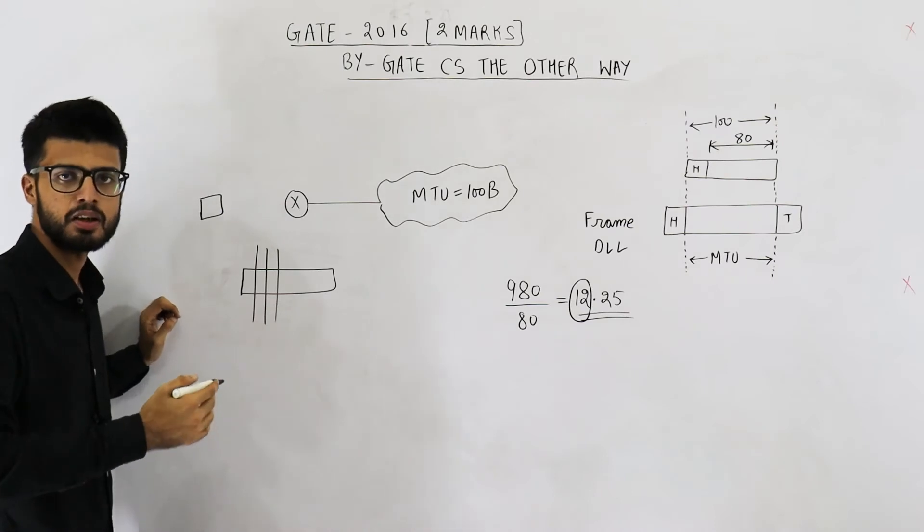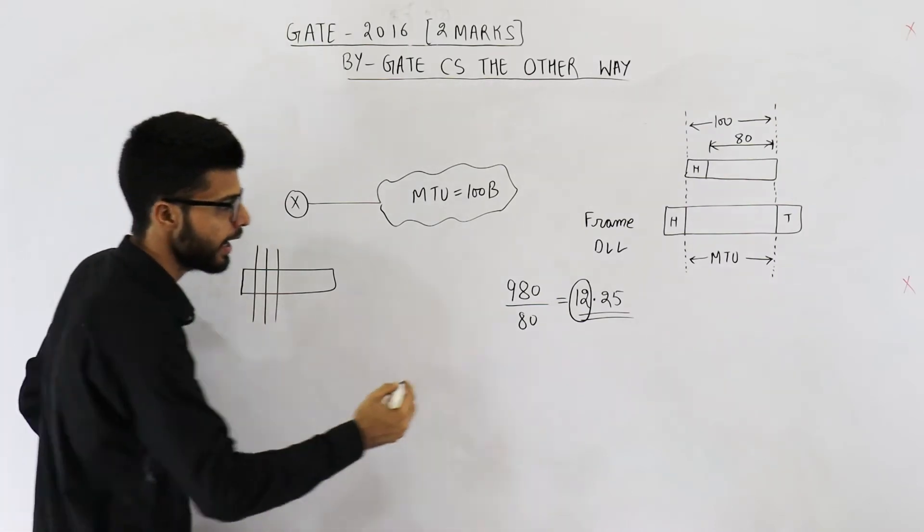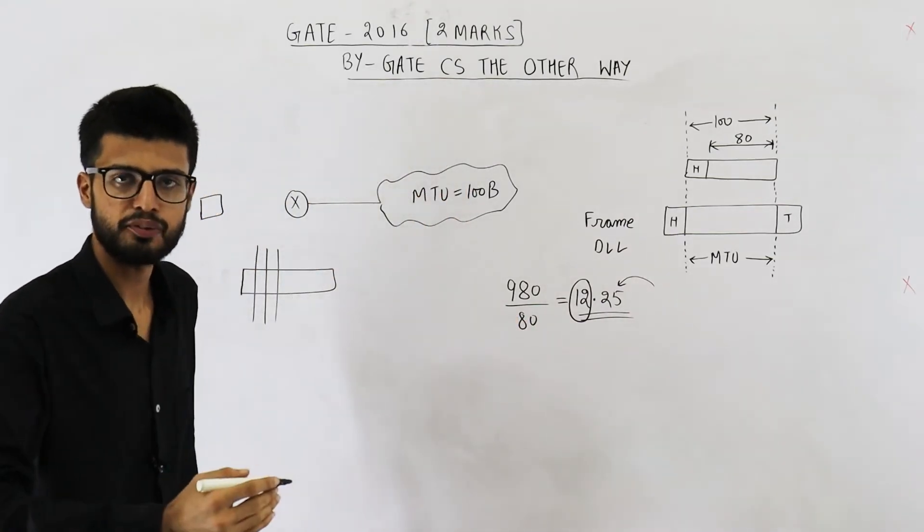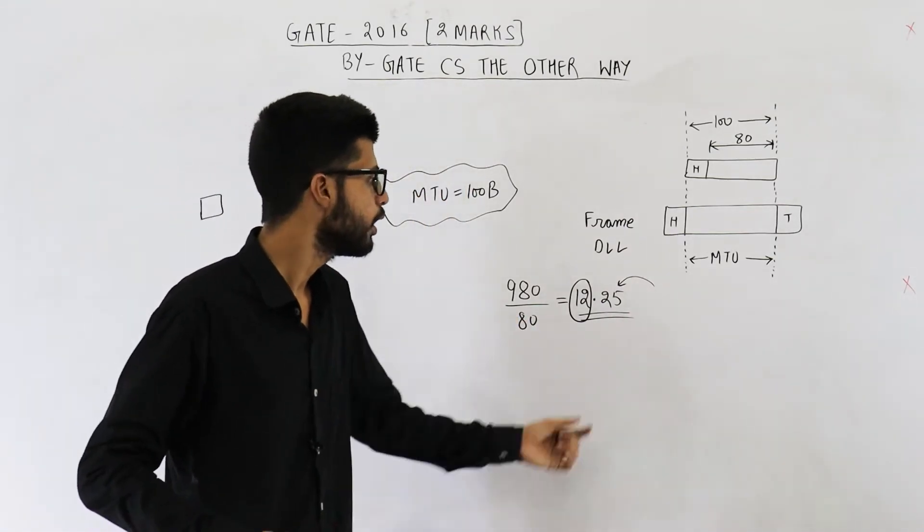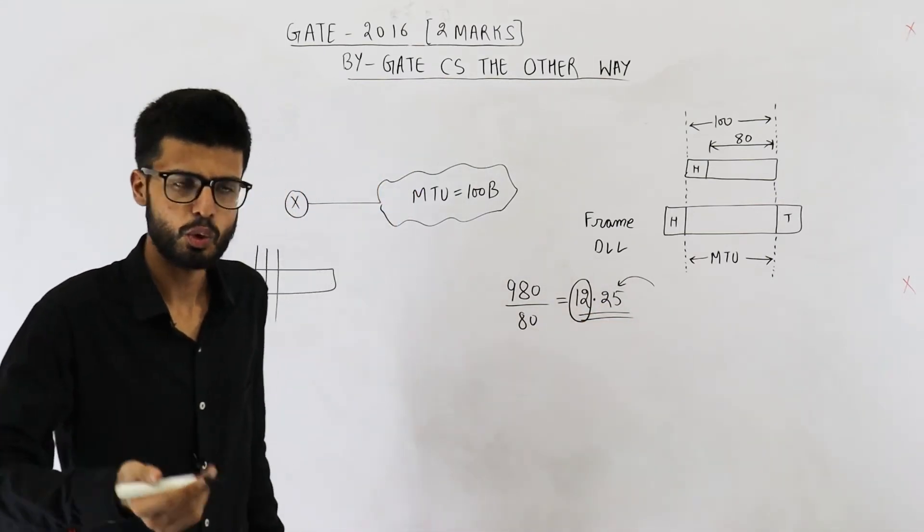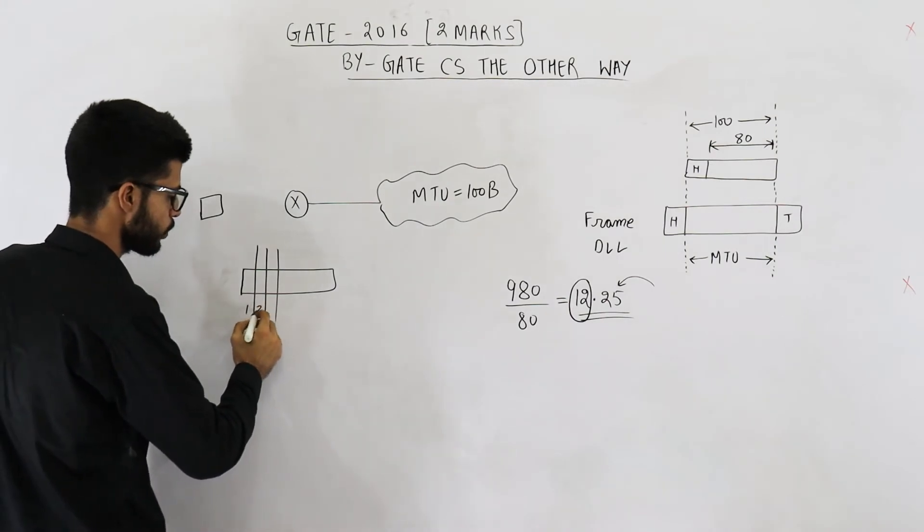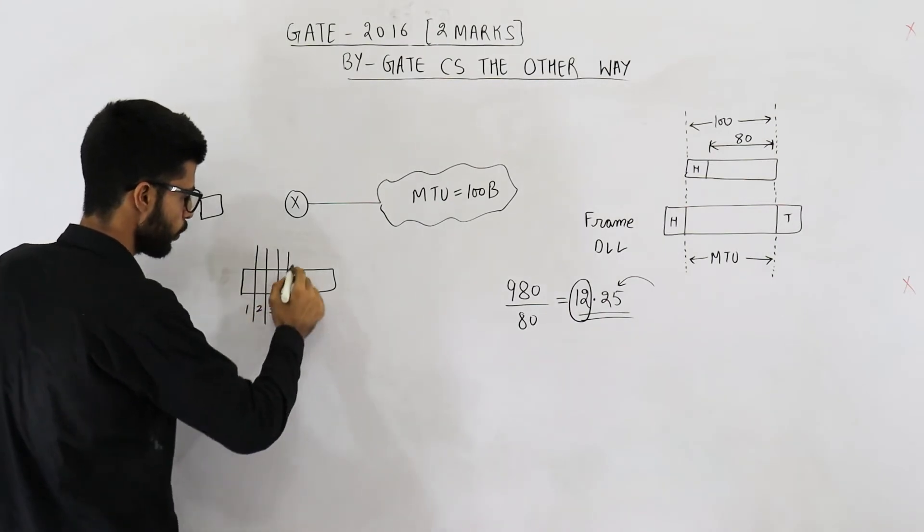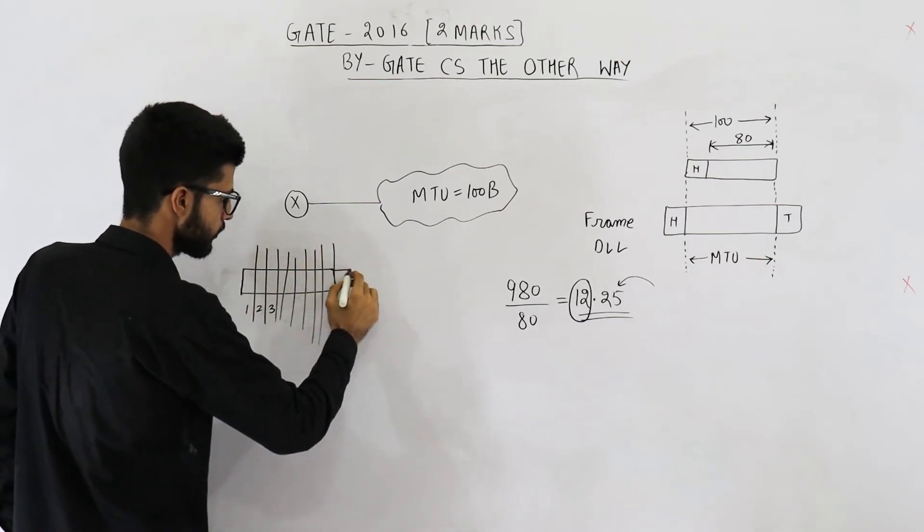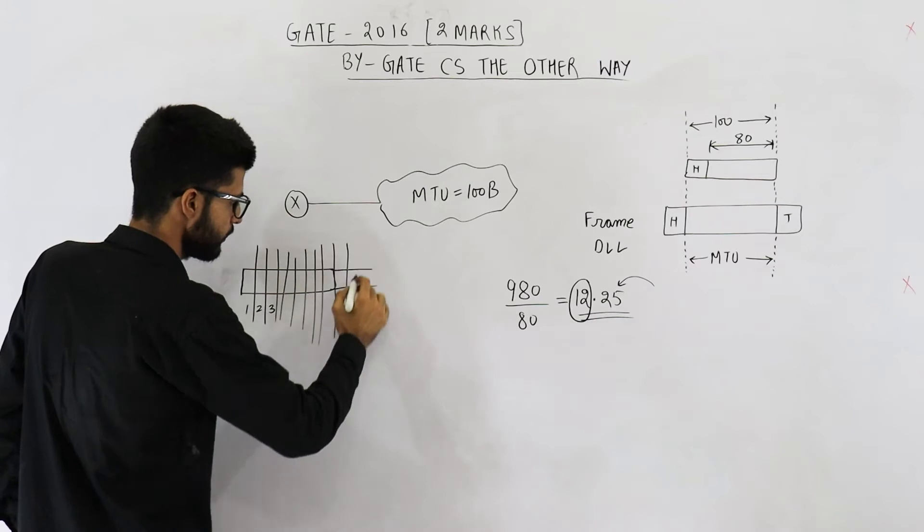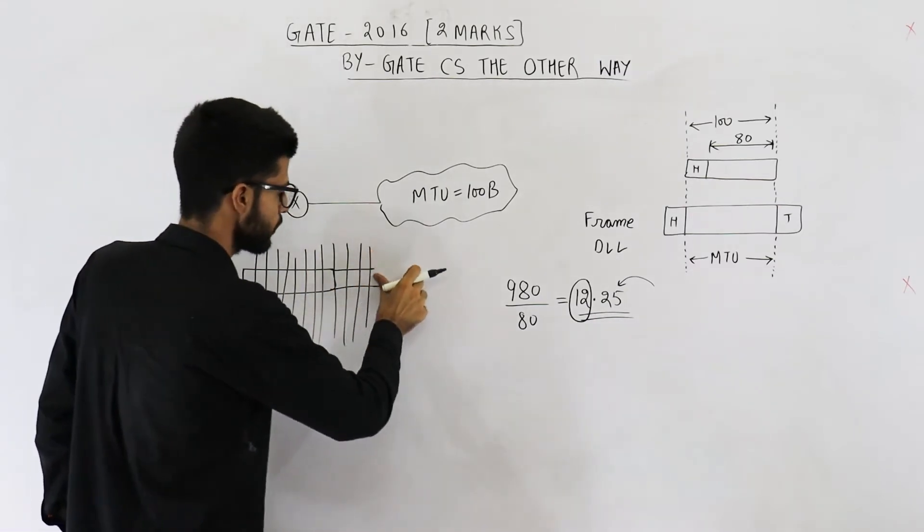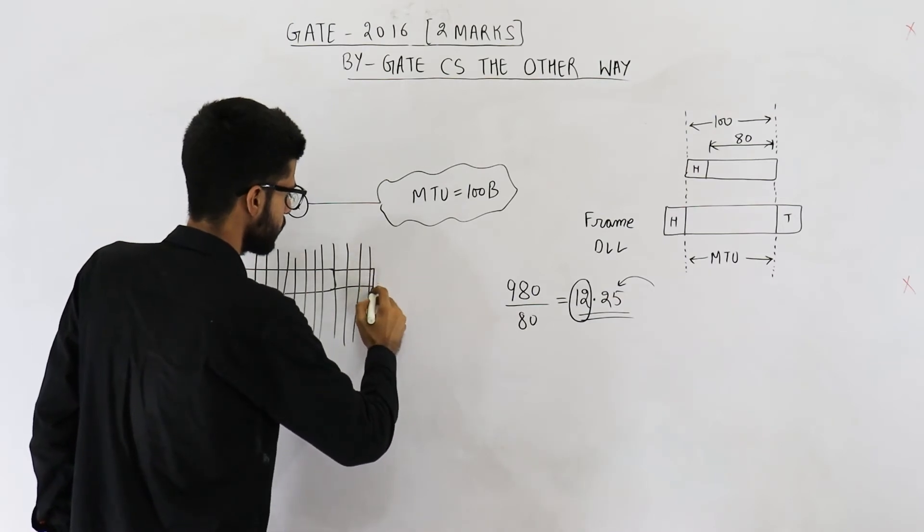That means 12 fragments will be of 80 bytes and in the 13th fragment, entire 80 bytes will not be present. The 13th fragment or last fragment will contain only 0.25th part of 80 bytes, that is 20 bytes. So we have fragments 1 through 12 complete, and fragment 13 which will be very small.